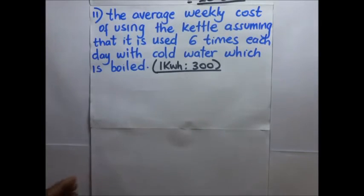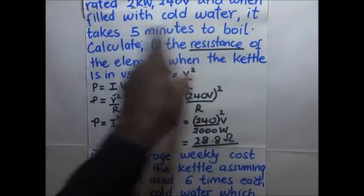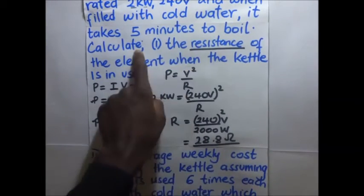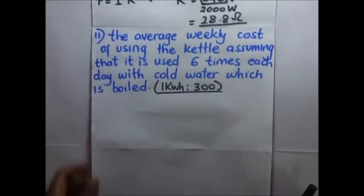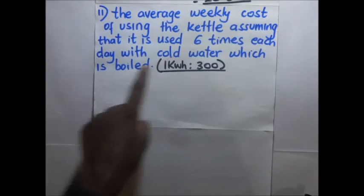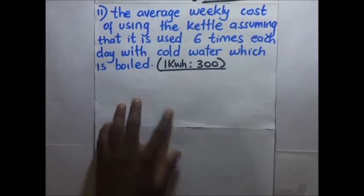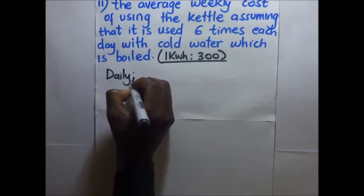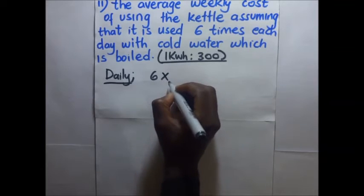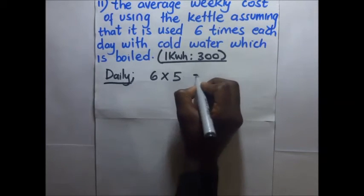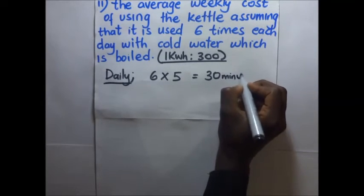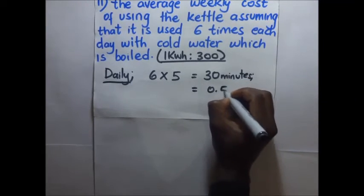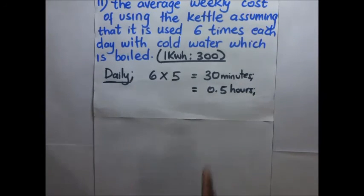According to the question, it takes five minutes to boil the water each time, and the kettle is used six times a day with cold water each time. So for daily use: 6 times multiplied by 5 minutes gives us 30 minutes per day, which is 0.5 hours per day.